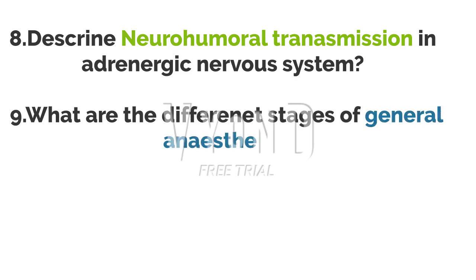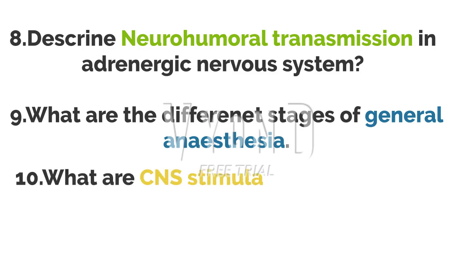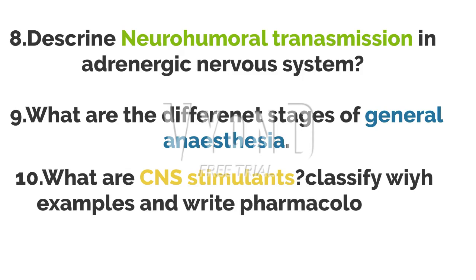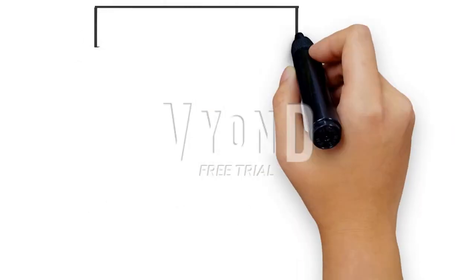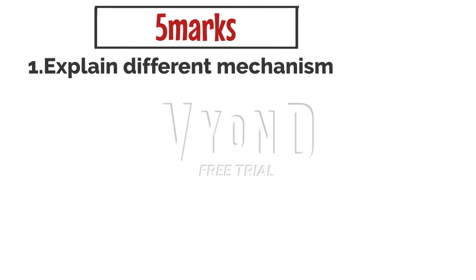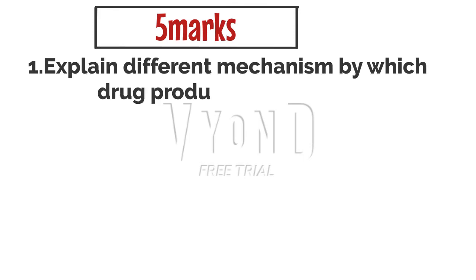The ninth question: what are the different stages of general anesthesia? There are four different stages — write and explain them. The tenth question: what are CNS stimulants? Classify with examples and write the pharmacology of caffeine. Remember two CNS stimulants: caffeine and codeine.